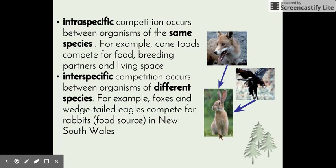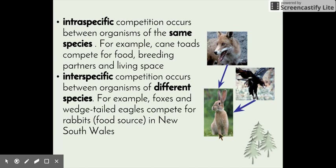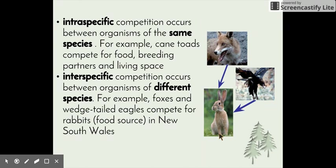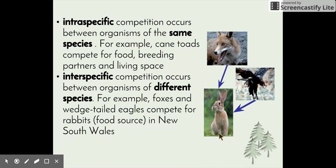There are two different types of competition. Intraspecific competition occurs between organisms of the same species — like our chicken example, where chickens compete for space and food, or cane toads competing for food, breeding partners and living space. Interspecific competition occurs between organisms of different species — for example, foxes and wedge-tailed eagles in New South Wales both compete for the same food source: the rabbit.